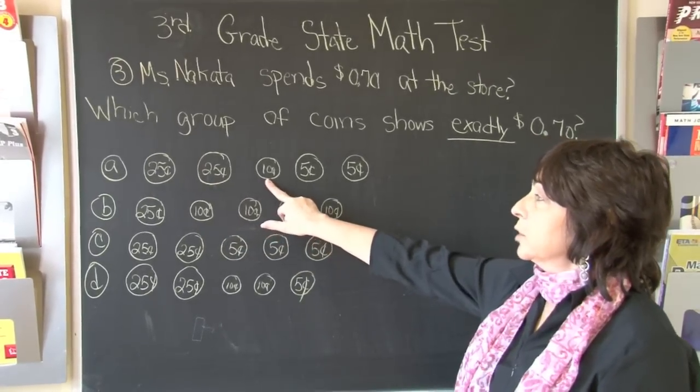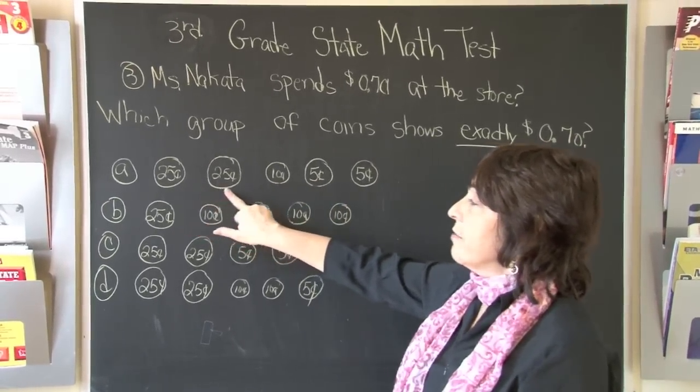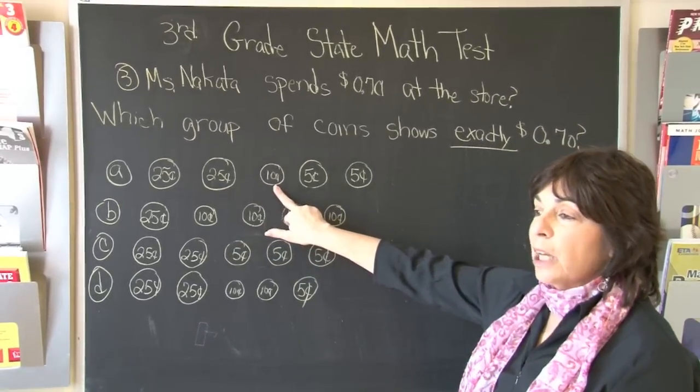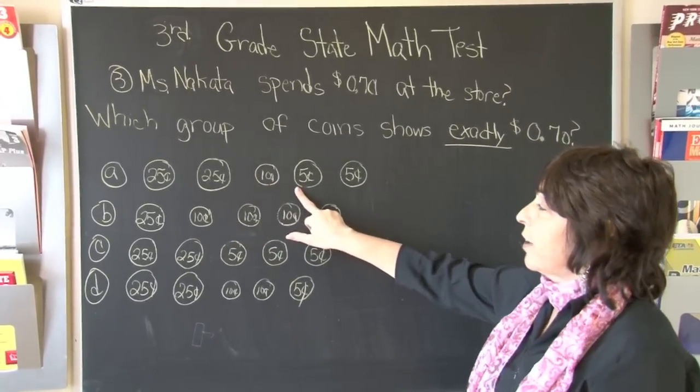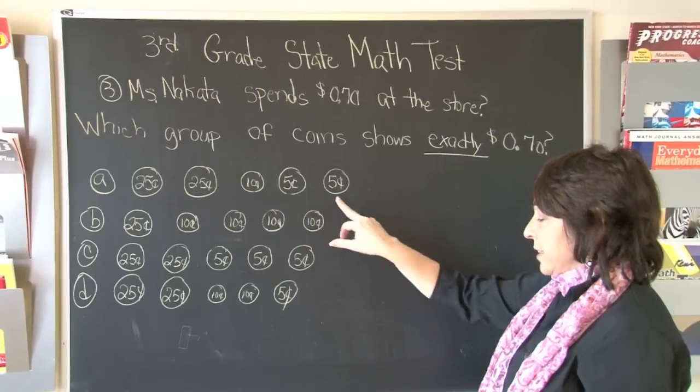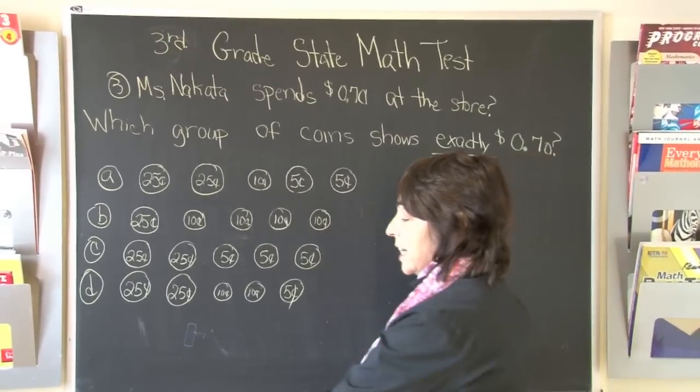The next coin is a nickel. 25, 50 plus 10 cents, 60. Plus 5 cents is 65. And another nickel, 65 plus 5 is 70. That is the answer.